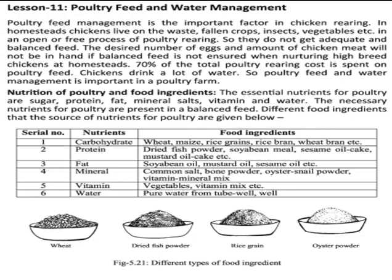The essential nutrients for the faulty are soga, protein, fat, mineral, salt, vitamin and water. The more important ingredients of the faulty feed are soga, protein, fat, mineral, salt, vitamin and water. The necessary nutrients for faulty are present in a balanced feed.